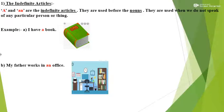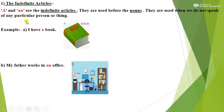A and An are the indefinite articles. They are used before nouns. They are used when we do not speak of any particular person or thing. Example A: I have a book. Here 'book' means I am not mentioning or talking about any particular book — any book.